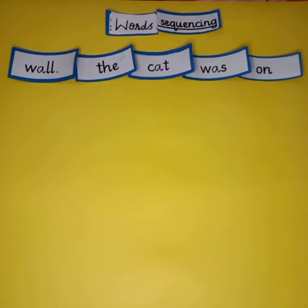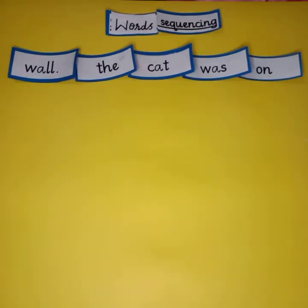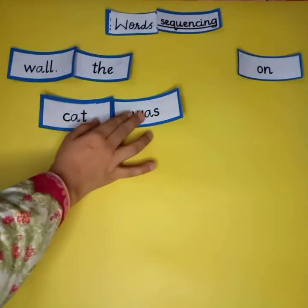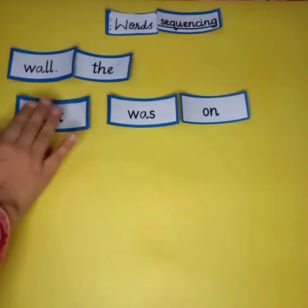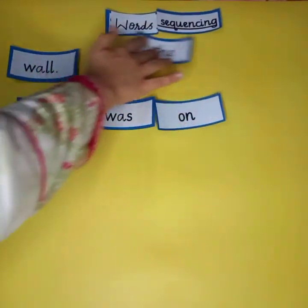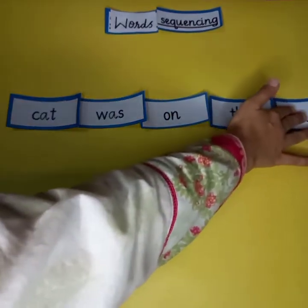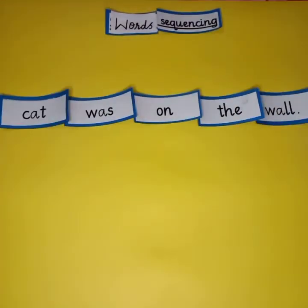Now let's practice some sentences which are not in the book. Read the words: 'while the cat was on.' Is it making any sense? No. So try to make them in the proper order. Think — what will be the first word? Yes — 'cat.' Cat was on the wall. Very good! Now it's making sense: cat was on the wall.